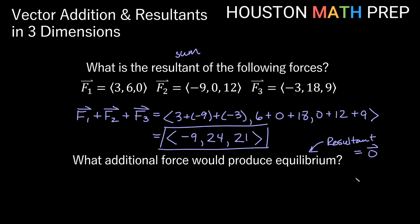We want a vector that has all zeros in it. So we have to think of what vector could we add? In other words, let's add a fourth force, a fourth vector. If we add this additional force with the other three that we already added up, how could we get equilibrium? How could we get the zero vector? And the answer is we just need to zero each of these out.